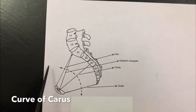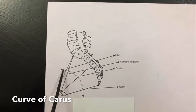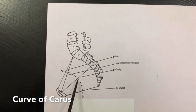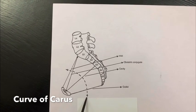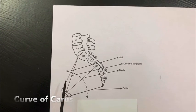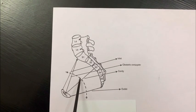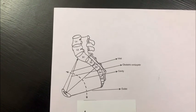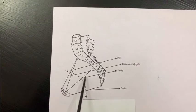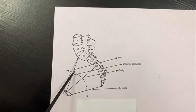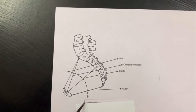When we draw a line joining the axis of the inlet, the cavity, and the outlet, it forms a curve called the curve of Carus. This is the route the fetus takes normally during its transit in the pelvic canal. Initially this axis is directed downwards and backwards, then downwards, and in the outlet it is directed downwards and forwards.